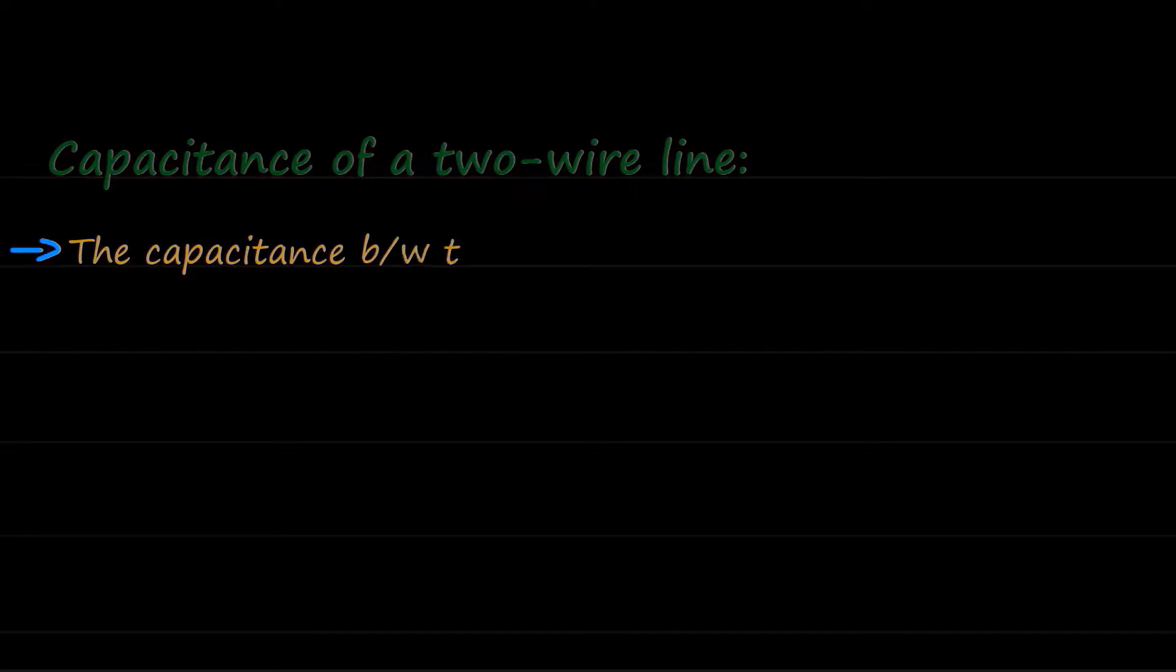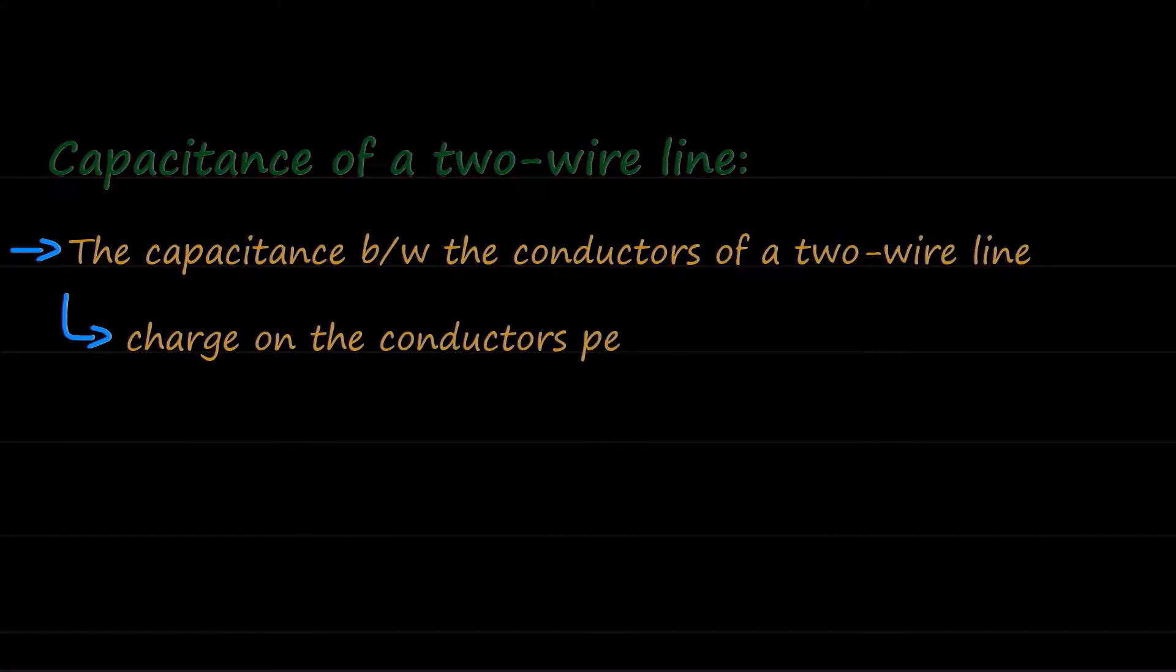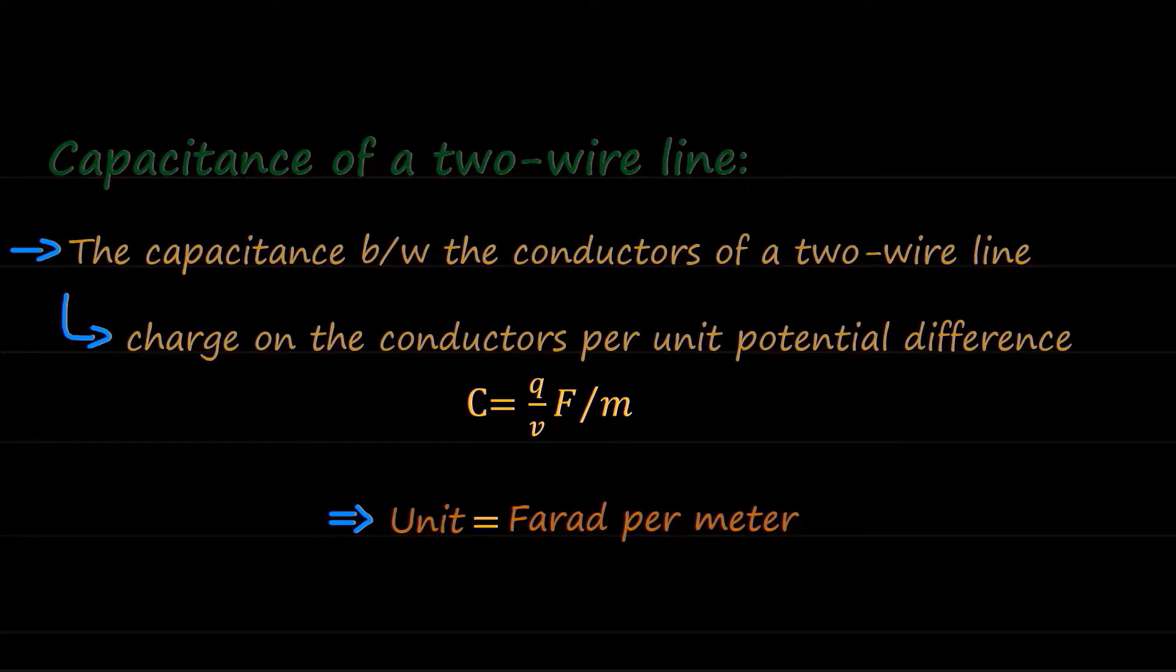First, we talk about capacitance of a two-wire line. The capacitance between the conductors of a two-wire line is defined as the charge on the conductors per unit potential difference between them. The capacitance here is calculated as per unit length. That's why it has a unit farad per meter. To find the capacitance first, we must find the expression for the potential difference between the two conductors.